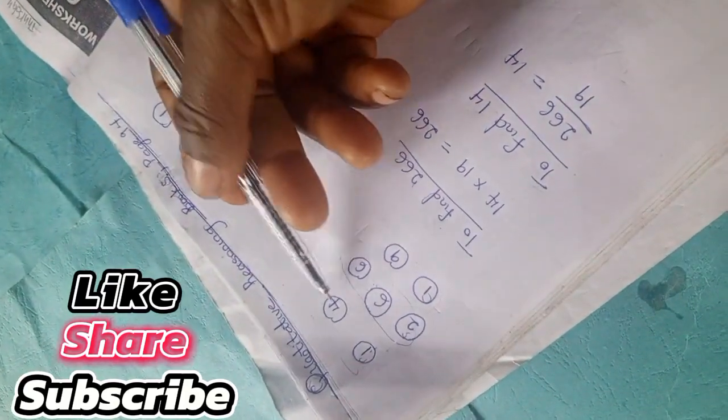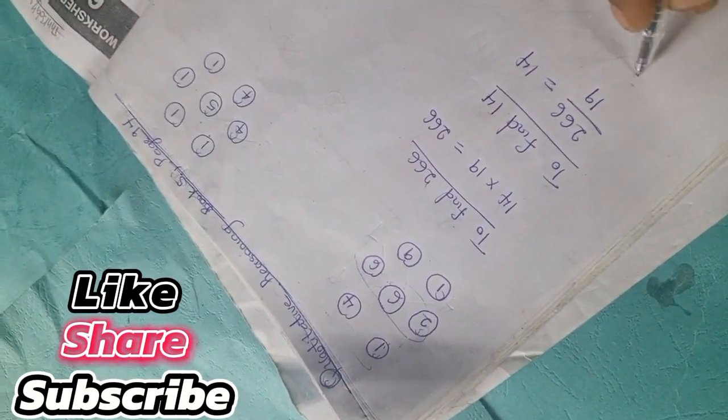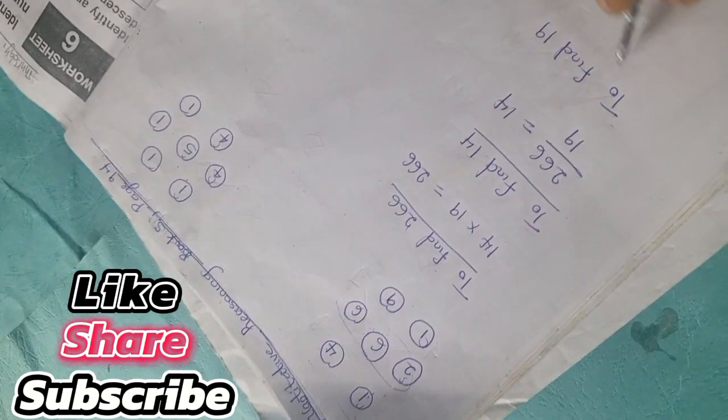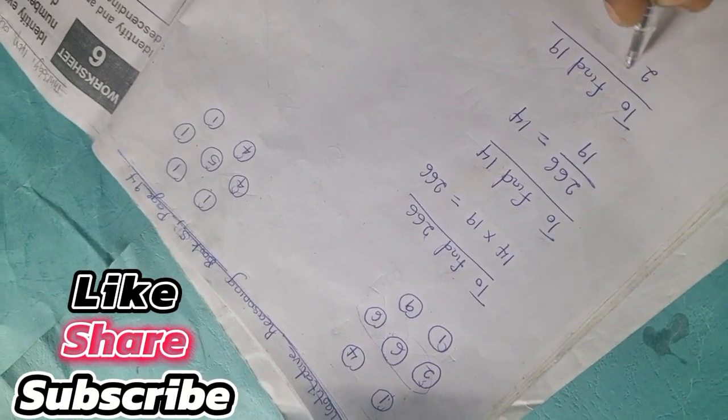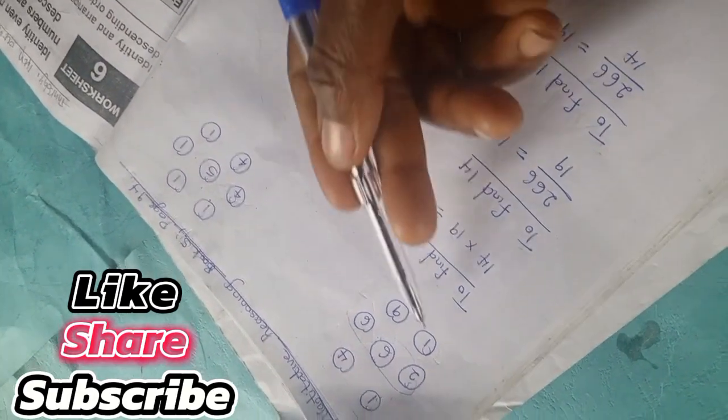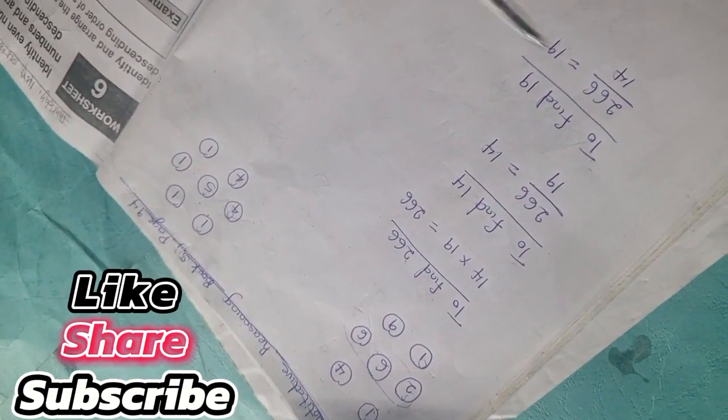To find 19, you have 266 divided by 14 and we have 19. So if you're looking for one, you simply divide and replace the number.